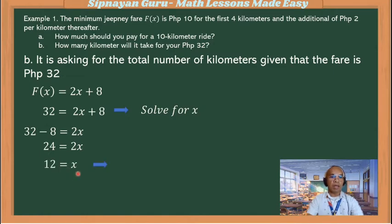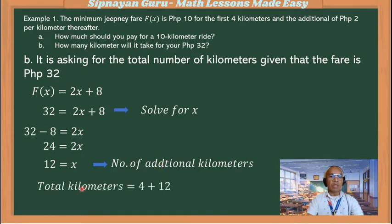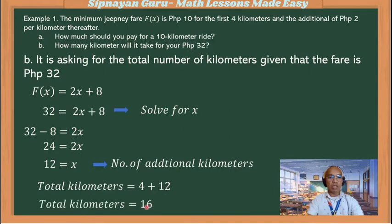So 12 is the number of additional kilometers. The total kilometers is therefore 4, for the minimum that costs 8 pesos, plus the additional 12 kilometers. So the total kilometers good for 32 pesos is 16 kilometers.